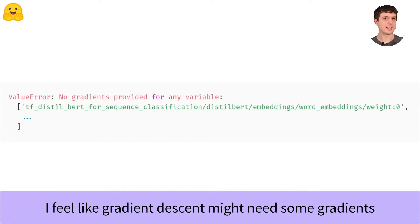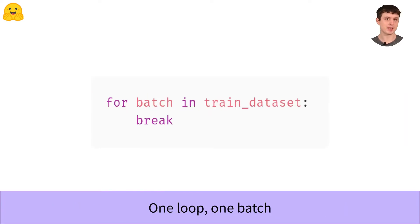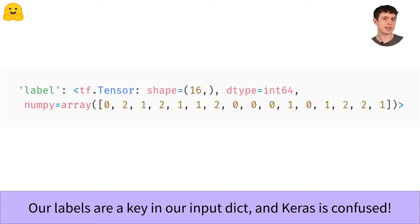The best way to make sure the data you're giving the model is good is to grab a batch from the tf.data dataset that your model is training on, because it's right at the end of the data pipeline. That means if those outputs are good, you're guaranteed that your data pipeline is working well. We can do that by looping over the dataset for one iteration and then breaking. What do we get when we inspect that batch? We're not getting any gradient because we're not passing labels to Keras. Our labels are in the batch, but they're a key in the input dictionary, not a separate label as Keras expects.